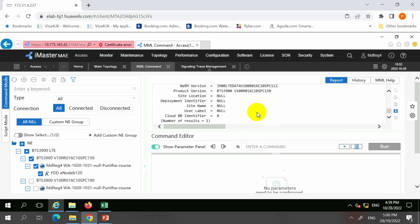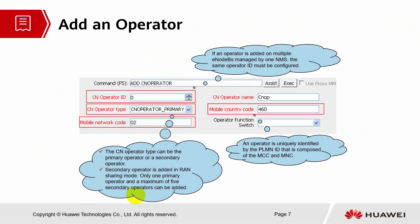Let's look into how to add an operator. If an operator is added on multiple eNodeBs managed by one NMS, the same operator ID must be configured. The CN operator type is primary. If you are sharing with another operator, it will be a secondary operator — secondary operators are added in range sharing mode. Only one primary operator can be configured and a maximum of five secondary operators can be configured. An operator is uniquely identified by the PLMN ID, which is composed of the MCC and MNC.